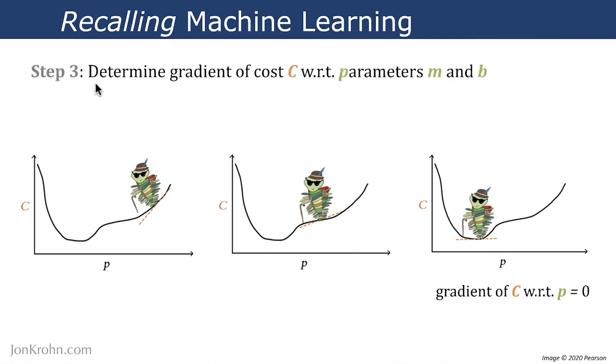In more detail, step three is determining the gradient of cost c with respect to our model parameters m and b. This is something that in the preceding couple of videos, we determined in extreme detail from partial derivative rule first principles. We're moving forward with our simple regression model where we're fitting a line with just two parameters, slope and y-intercept, to some data points. In the preceding videos, we figured out exactly how to do that with partial derivative calculus. So we have our gradient of cost.